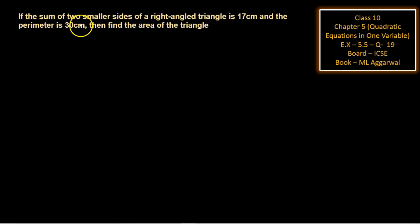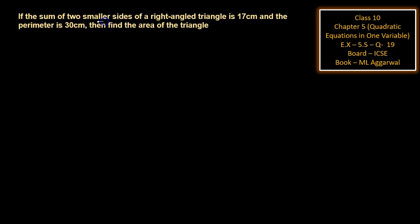Hello to everyone, welcome back to my channel. Today's question is: if the sum of two smaller sides of a right angle triangle is 17 cm and the perimeter is 30 cm, then find the area of the triangle.